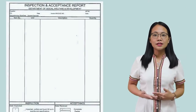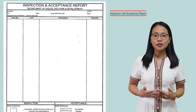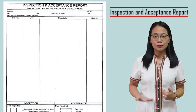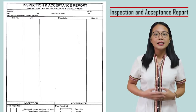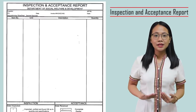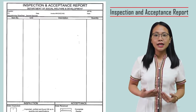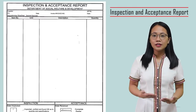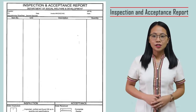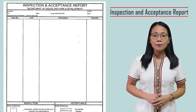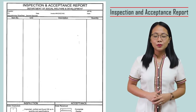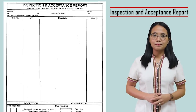Another one is the Inspection and Acceptance Report. This must be signed by the inspector and the end user to ensure that all delivered items are complete based on the approved purchase order.